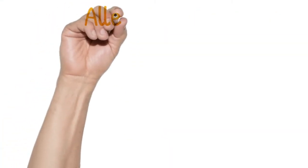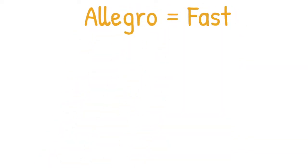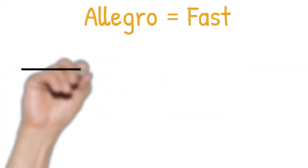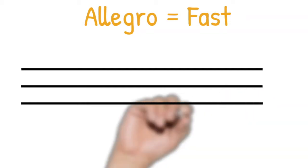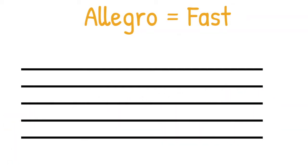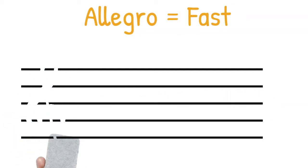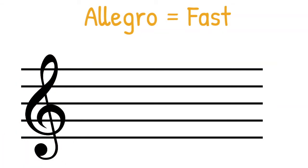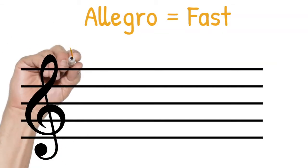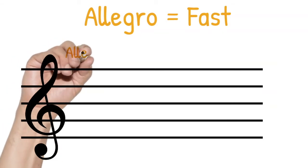And then there's the term allegro, which indicates a fast tempo. Allegro is also very commonly used. Most of the music you hear in adverts uses this tempo because it's faster than the average heart rate and therefore gives a sense of excitement.